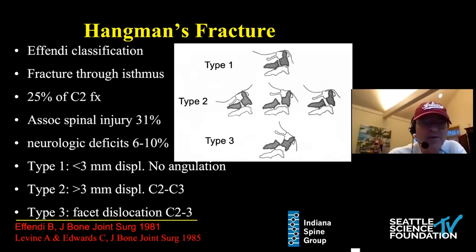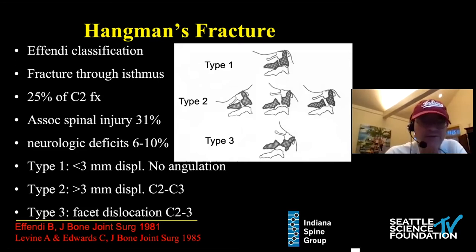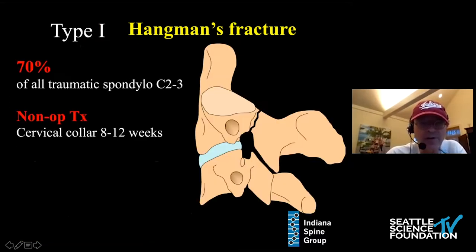There is a very rare incidence of neurologic deficits because this is a canal-expanding fracture, except for atypical Hangman's fractures, which we'll talk about in just a moment.